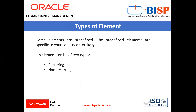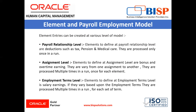Some elements are predefined. The predefined elements are specific to your country or territory. They typically include deductions for tax and wage attachments. You cannot make any changes to these predefined elements. Elements can be of two types: recurring and non-recurring. Recurring are the ones that are processed for each and every pay period, and non-recurring are the ones that are paid once in a while. For example, a bonus is non-recurring and a regular salary is a recurring element.